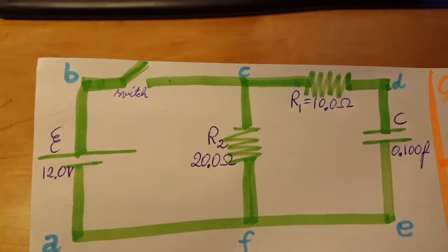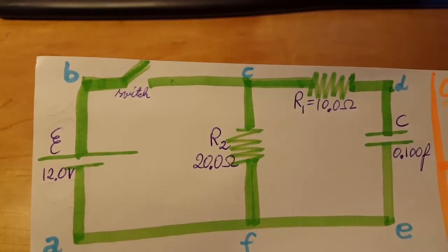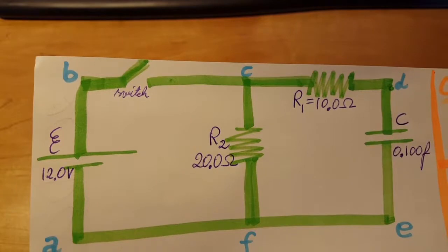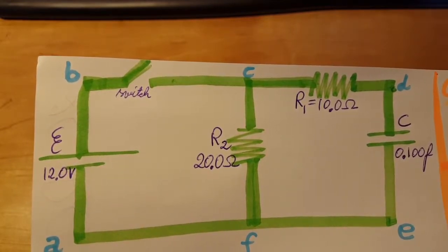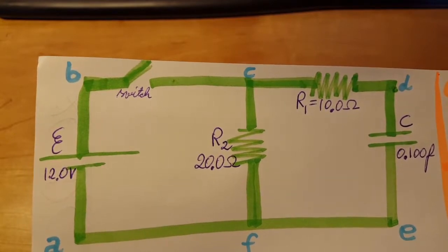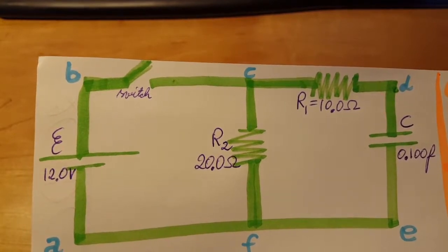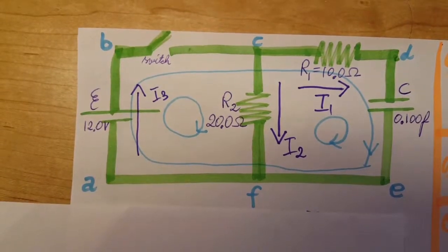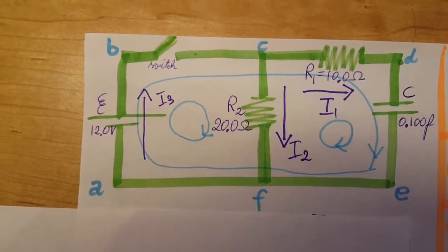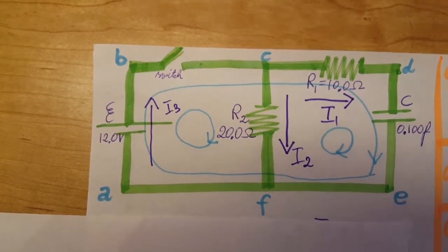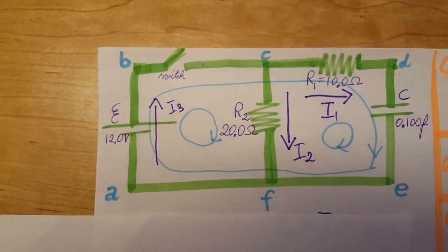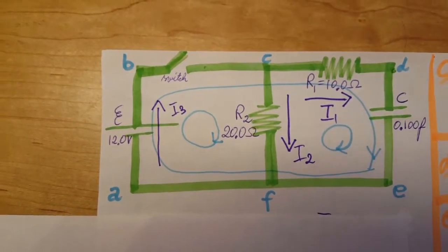We have an RC circuit problem. We have a capacitor that is uncharged at first, and at t equals zero we're going to close the switch. The description of the problem is below the video, so if you want to pause and write it down, go ahead.